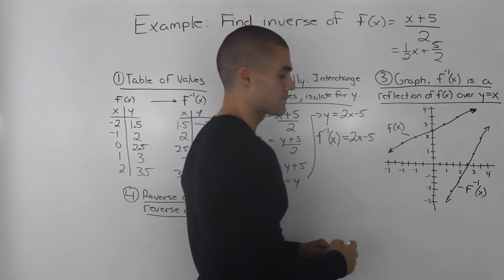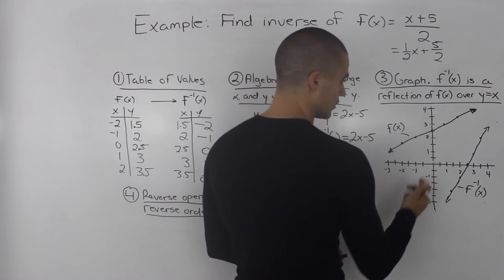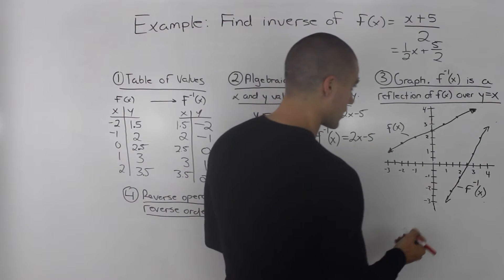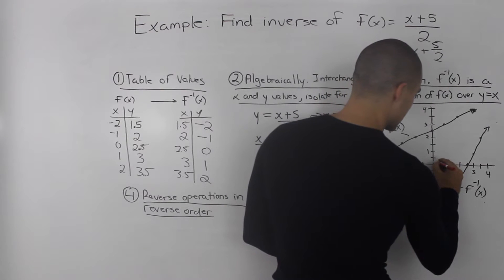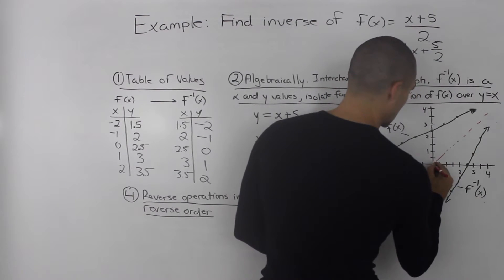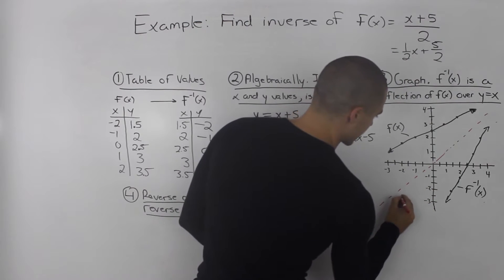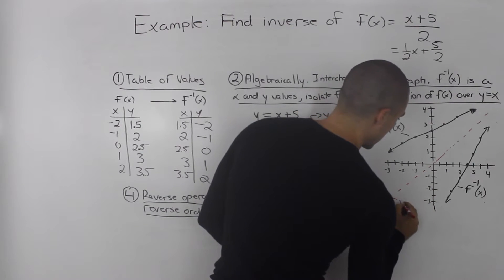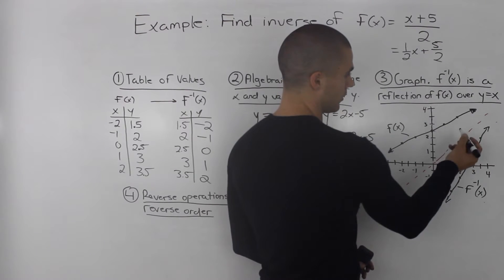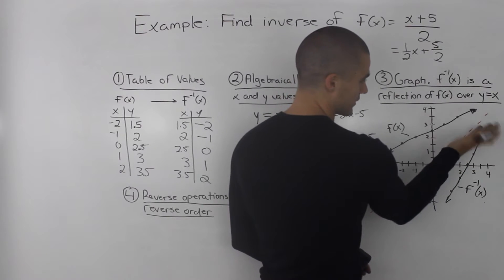They're both lines. And if you look closely, you might not be able to see it with my horrible drawing, but both of these lines are reflections of each other along the line y equals x. This here, this line would be y equals x. Each corresponding point is just interchanged and reflected over the line.